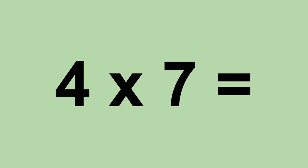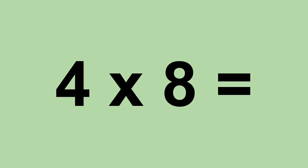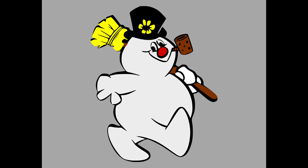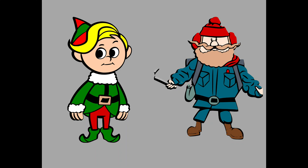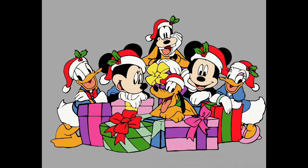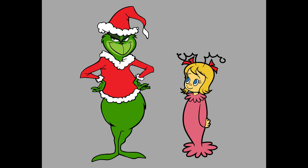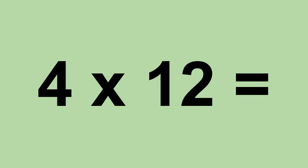Four times seven equals twenty-eight. Four times eight equals thirty-two. Four times nine equals thirty-six. Four times ten equals forty. Four times eleven equals forty-four. Four times twelve equals forty-eight.